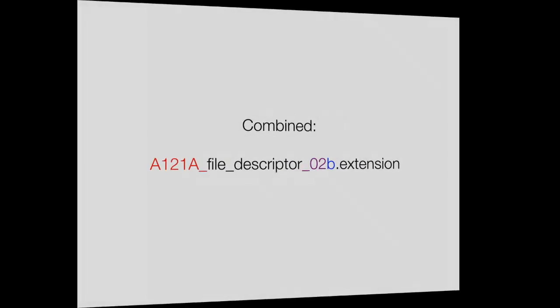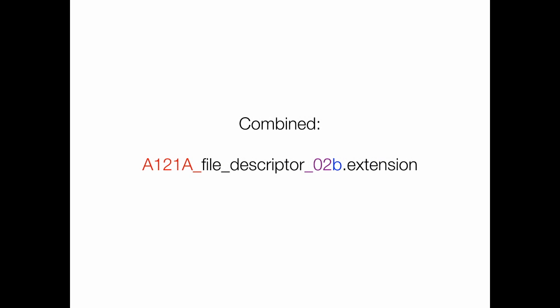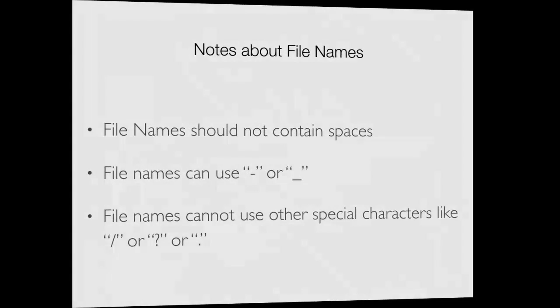So all together: you'd have the prefix 'A121A' for the class, some stuff in the middle describing what the file is — entirely up to you — and at the end, the addition and version so you know what version it was. Then dot extension: DWG for AutoCAD, PSD for Photoshop, and so on.